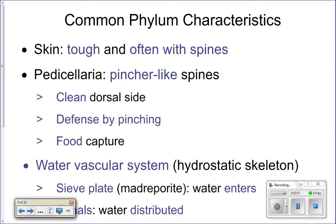They've also got these cool things called pedicellariae — these are like pincher-like spines, little spines that have pinchers on them. They're used for a variety of things: they can be used for defense, so if something's trying to eat the sea star, the pedicellariae can pinch the predator. They can also be used to clean the dorsal side of the animal — spores of algae and other animals that try to settle on the sea star can be picked up and tossed off. They can also be used for food capture, passing little pieces of food down into the mouth.